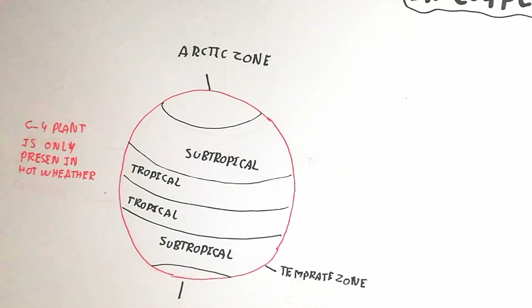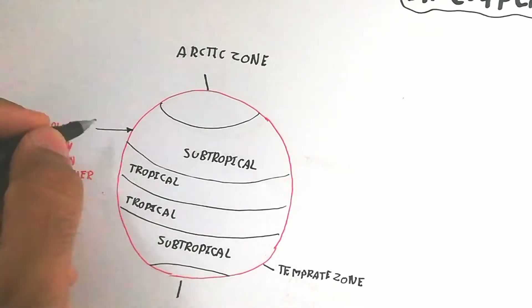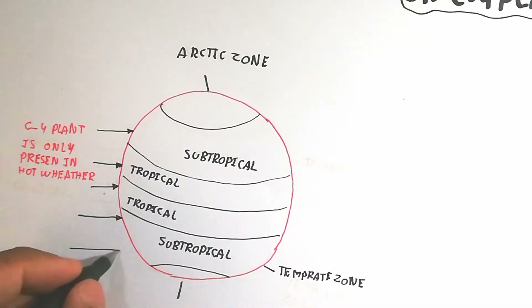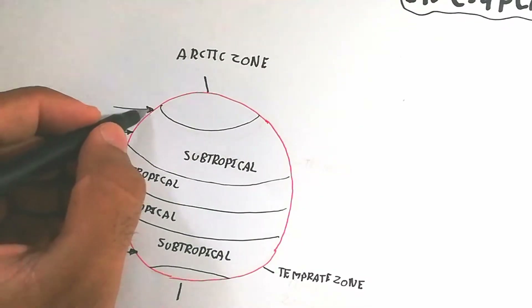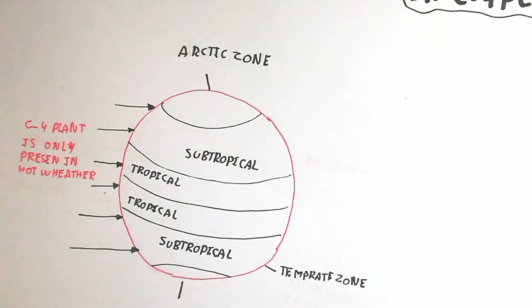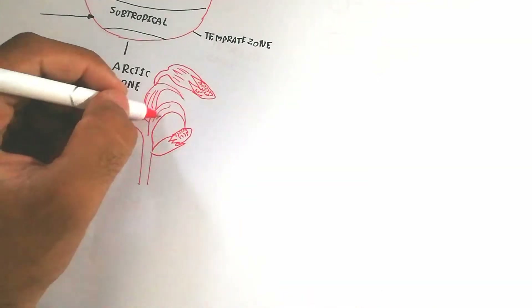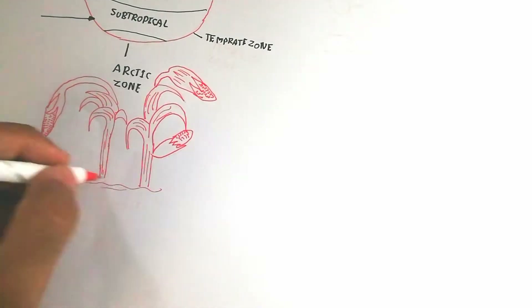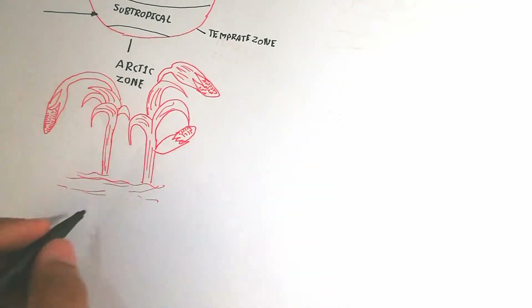C4 plants are only present in hot weather regions. In these areas, light comes at a vertical angle, so light can scatter around the atmosphere. There is not the same total light present in Arctic or temperate zones. Maize and sugarcane are very good examples of C4 plants.